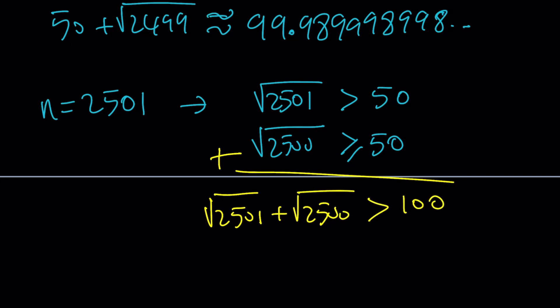Awesome. Which means n equals 2,501 is the smallest number. And it's the smallest because anything larger than this will work anyways. Let's go ahead and take a look at the graph. And we'll finish up with that.